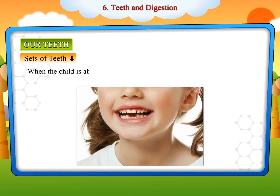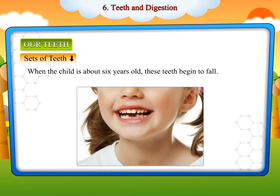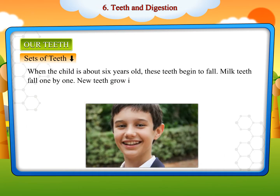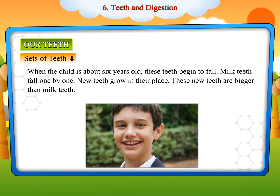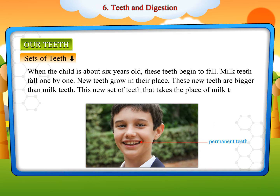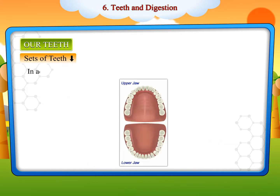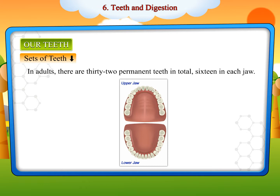When the child is about six years old, these teeth begin to fall. Milk teeth fall one by one and new teeth grow in their place. These new teeth are bigger than milk teeth. This new set is called permanent teeth. In adults, there are thirty-two permanent teeth in total, sixteen in each jaw.